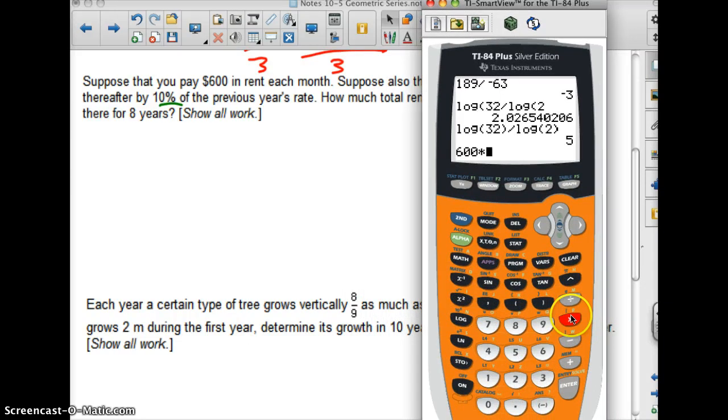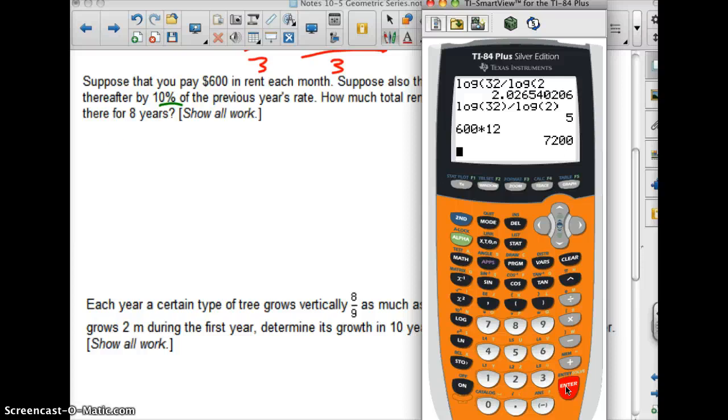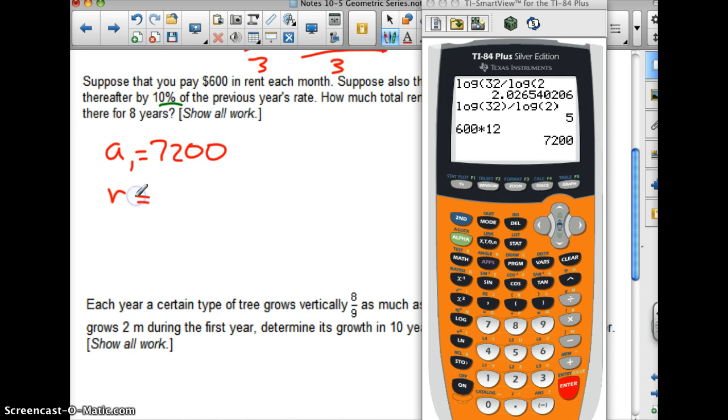We'll do it by year. 600 times 12 is going to give me an a1 of 7,200. So the first term in my sequence is going to be 7,200. The amount that I'm going to be multiplying it by is not 0.1. It's actually 1.1. They're going to charge 110% of what they did the year before. And we are doing this for eight years total. So n is 8. There we go. We have everything we need to find the sum of the rent that we are going to pay for eight full years.